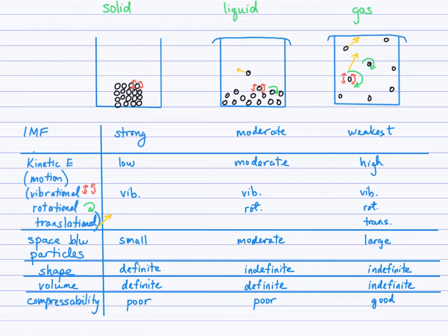And actually, in our kinetic molecular theory, we're going to assume those intermolecular forces to be so weak that, in fact, we consider no attractive forces between them. All right, so I think we've covered the intermolecular forces, the kinetic energy and types of motion, the spaces between the particles, as well as shape.